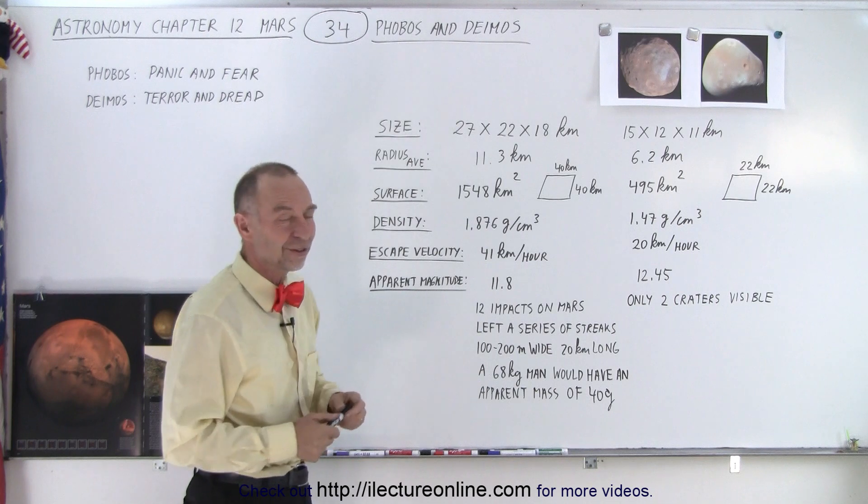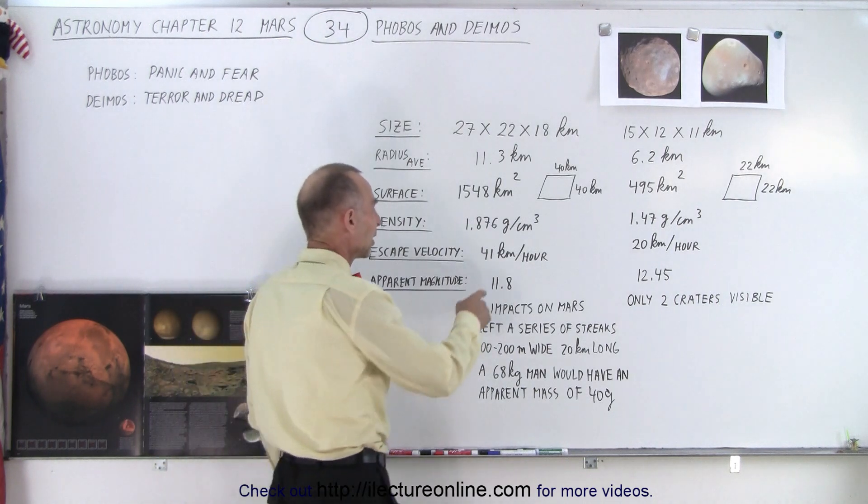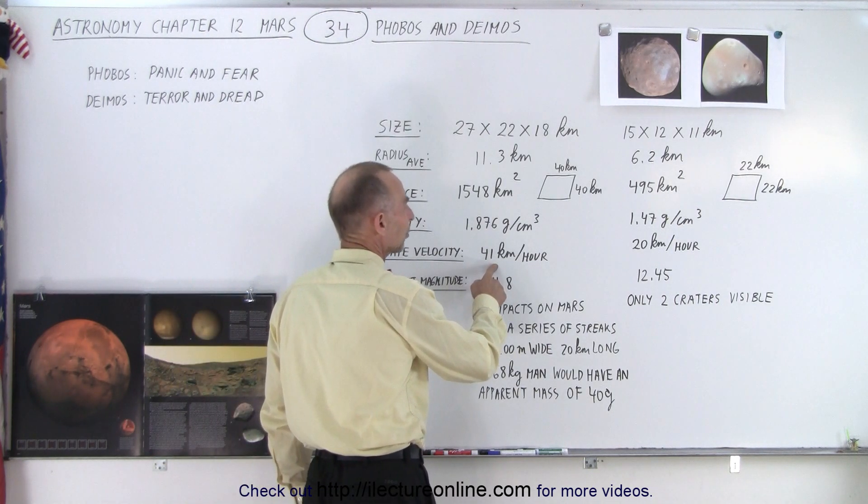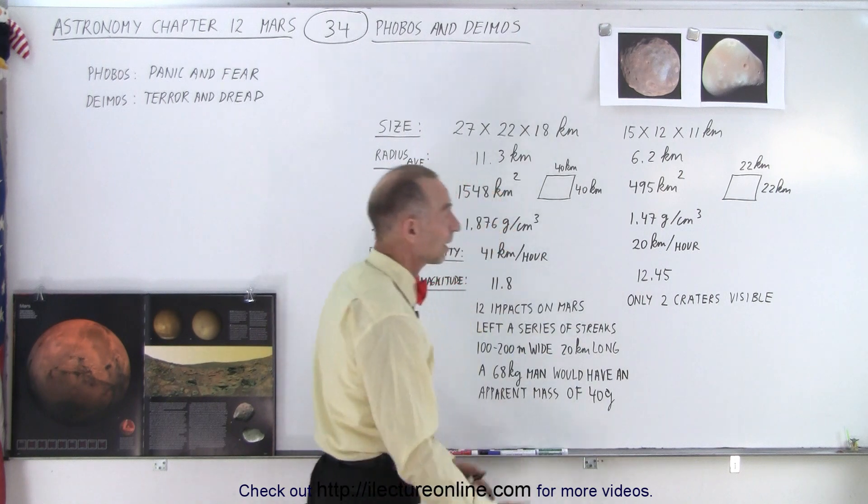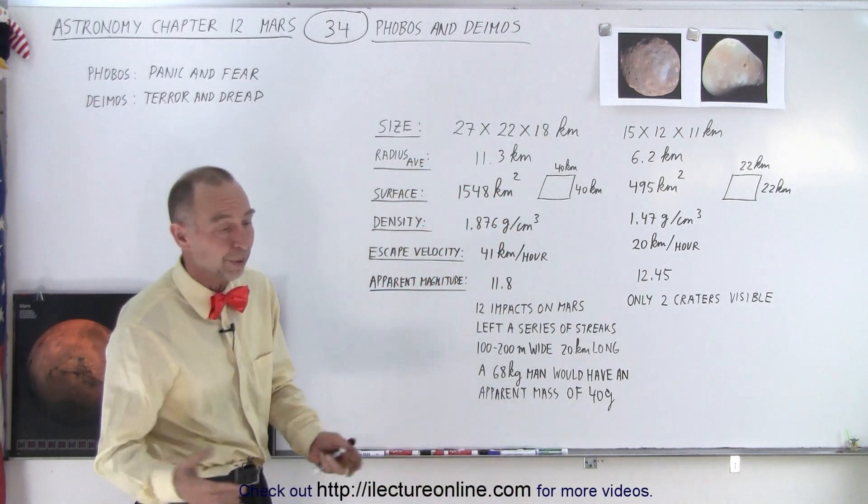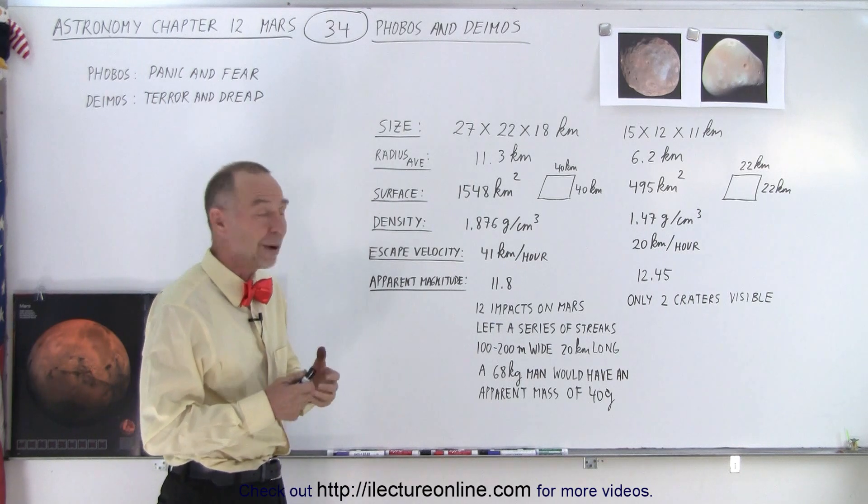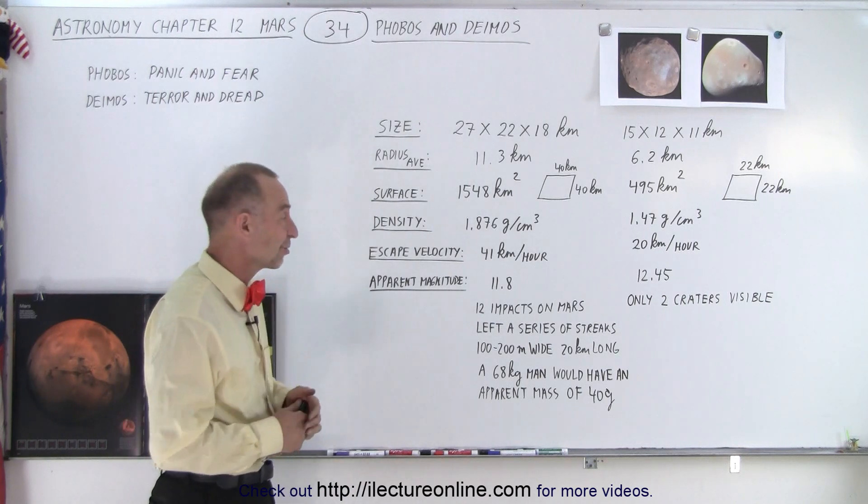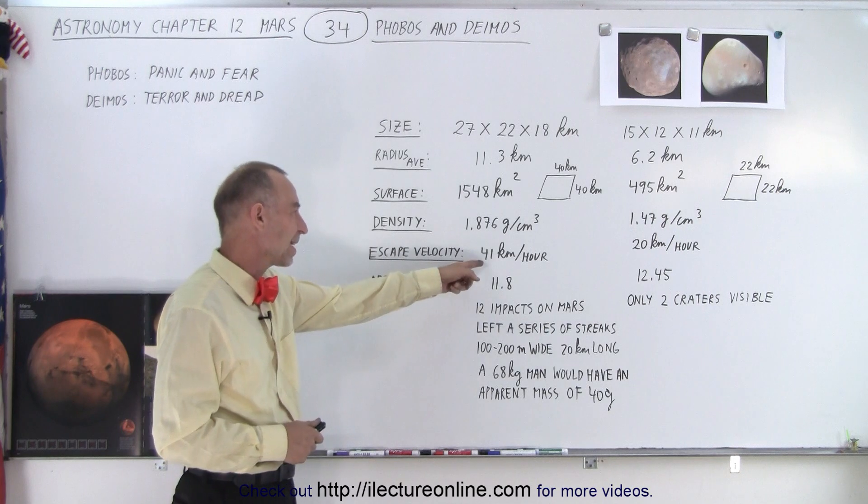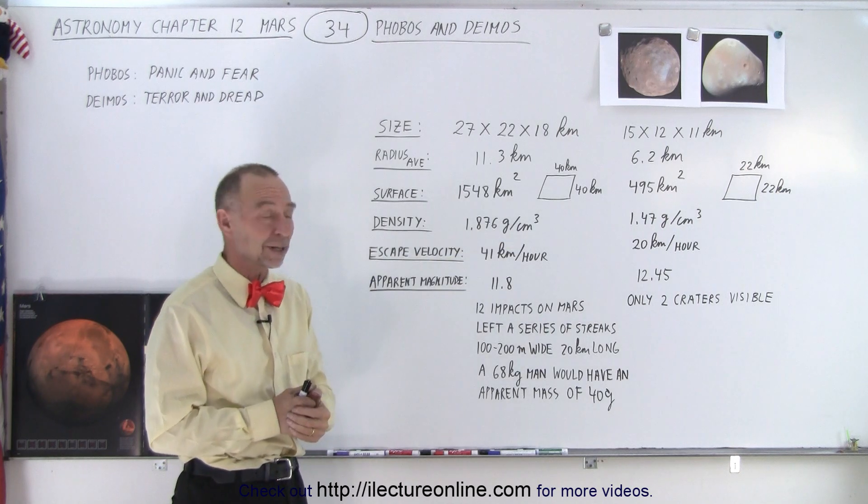The escape velocity is kind of interesting. Notice the escape velocity to get away from Phobos is 41 kilometers per hour, and for Deimos is 20 kilometers per hour, which is about 12 miles per hour. If you could jump up high enough, you might be able to escape from the gravitational attraction. Maybe not here, but for Deimos you might want to give it a try.